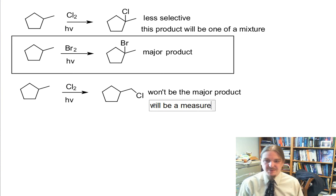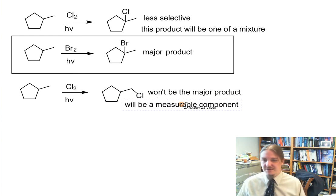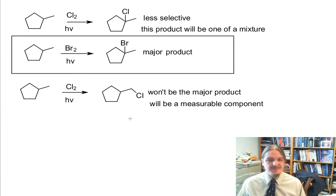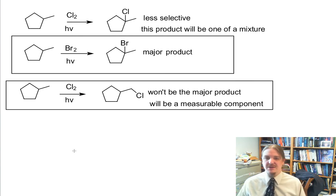It is going to be a measurable component of the mixture. So as long as you are okay separating out possible isomers, chlorination is fine to produce a less substituted product. If you are intent on generating the less substituted product and you don't care about the separation, then chlorine is the way to go.